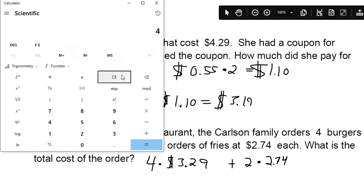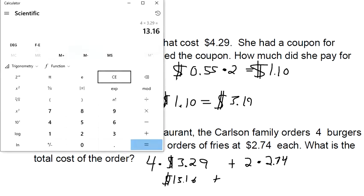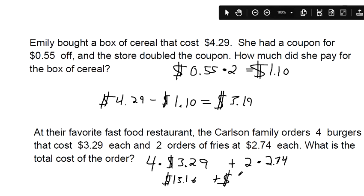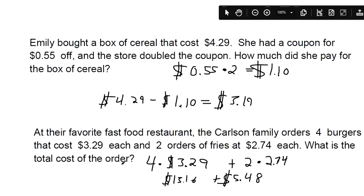So we can multiply first. Four times $3.29 gives us $13.16. And then two times $2.74 gives us $5.48. So if we add those together, $18.64 for this meal.